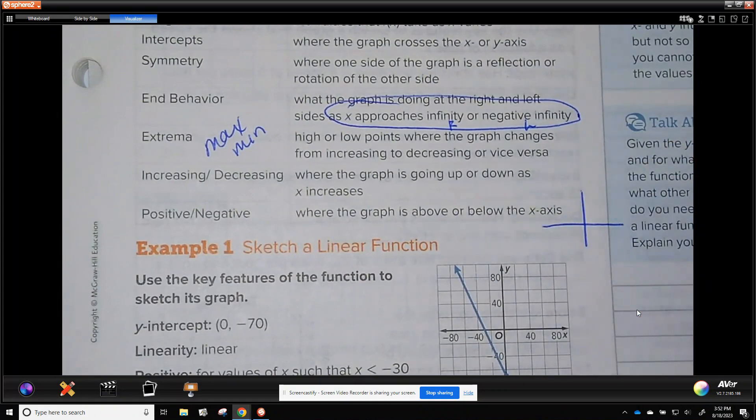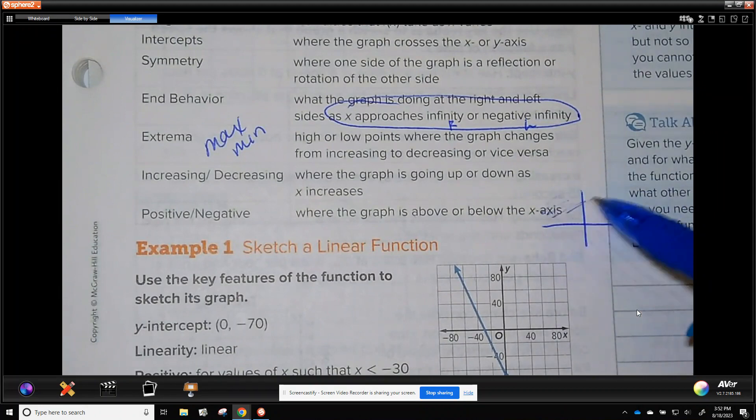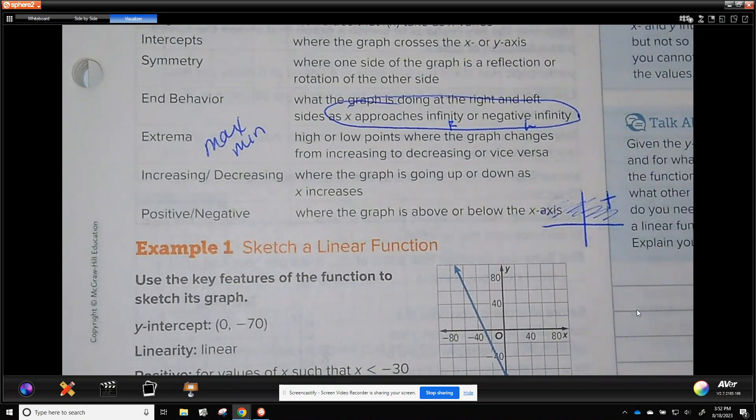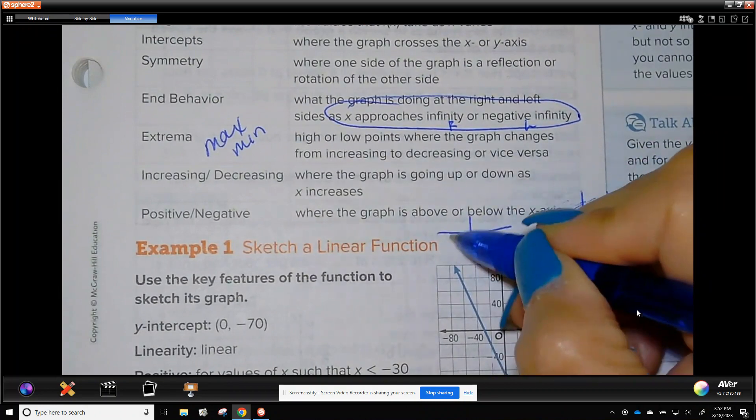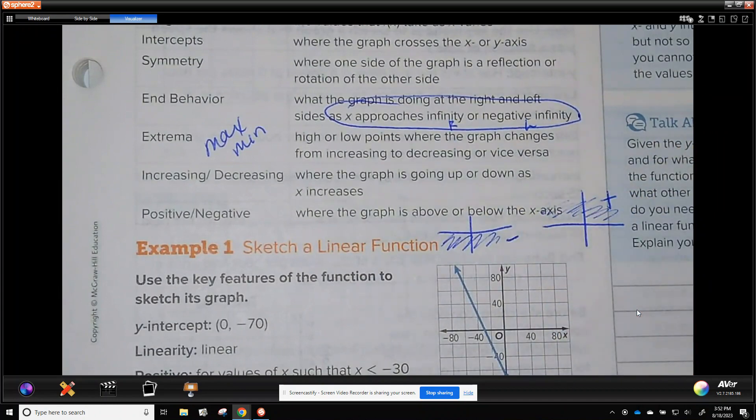So if I have a positive graph that means the whole graph is maintained where y is positive, and if a graph is negative that means the entire graph is below zero for y.